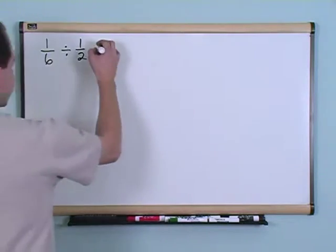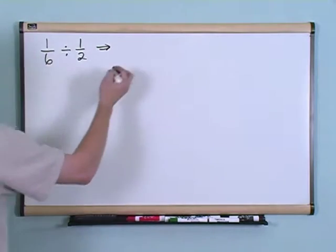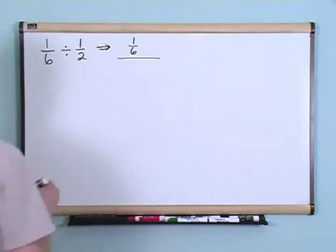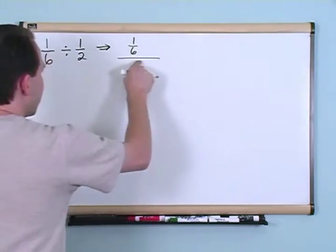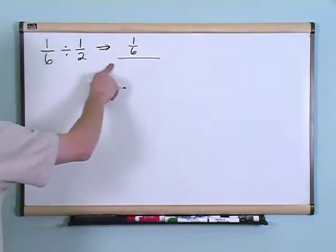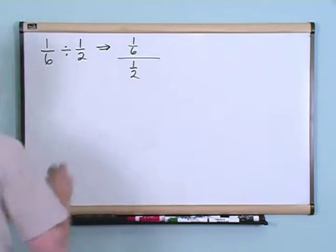Well let's rewrite that a little bit and I'll show you what they're really asking. You have one sixth, which is just a number, don't forget, and I'm dividing by, which is what this big bar means, I'm dividing by one half, okay?